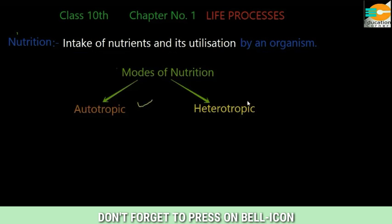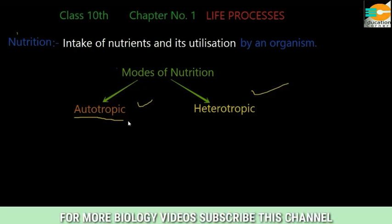Nutrition is the intake of nutrients and their utilization by an organism. There are two modes of nutrition: autotrophic nutrition and heterotrophic nutrition. Autotrophic means self-nutrition — plants make their own food themselves; they don't have to obtain food from somewhere else.